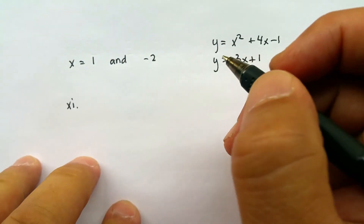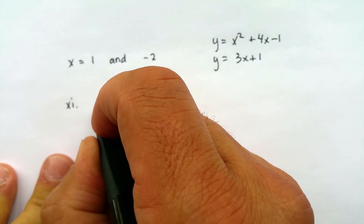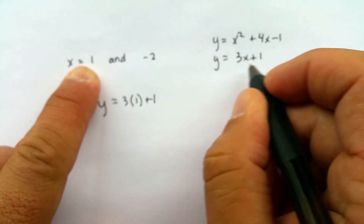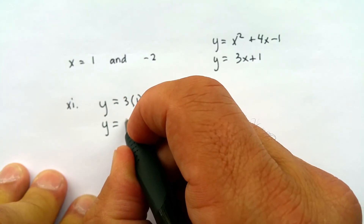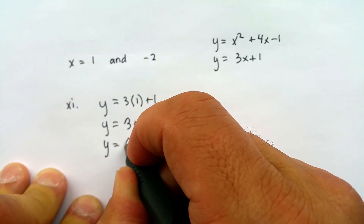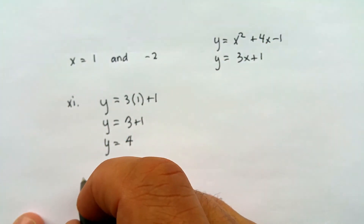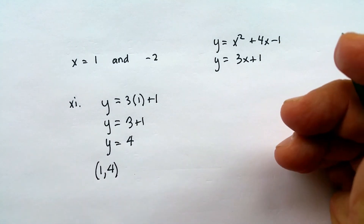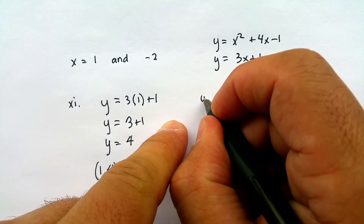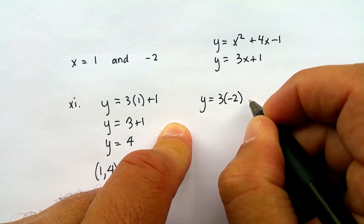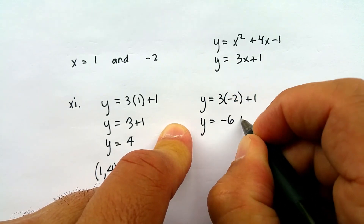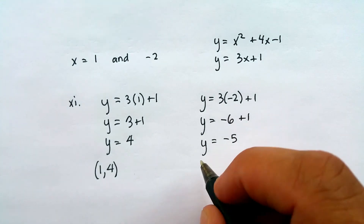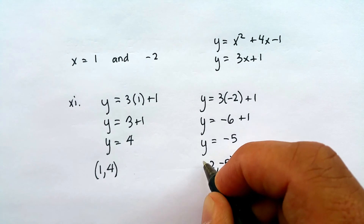Substituting x equals 1: y equals 3 times 1 plus 1, giving y equals 3 plus 1, so y equals 4. One possible intersection is (1, 4). Now substituting x equals negative 2: y equals 3 times negative 2 plus 1, giving y equals negative 6 plus 1, so y equals negative 5. Where x is negative 2, y is negative 5.